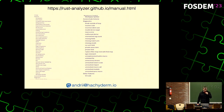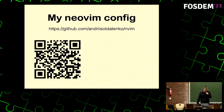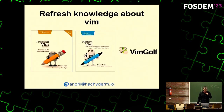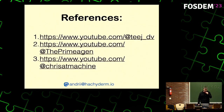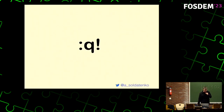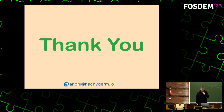Rust-analyzer can do very nice refactoring — like applying De Morgan's law to your binary logic, or replacing some patterns, etc. I'm personally using a big config — you can check it out if you want. It's more organized since it's really big, not one file. If you need to refresh your Vim knowledge, there are two really good books, and you can play Vim Golf if you've never tried it. A few references of people who inspired me to use Neovim a lot — and thank you, questions?